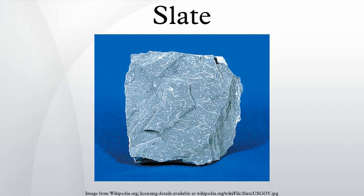Germany's Moselle River region, Hunsrück, Eifel, Westerwald, Thuringia and North Bavaria, and Alta, Norway also produce slate. Some of the slate from Wales and Cumbria is colored slate — purple and formerly green in Wales, and green in Cumbria.